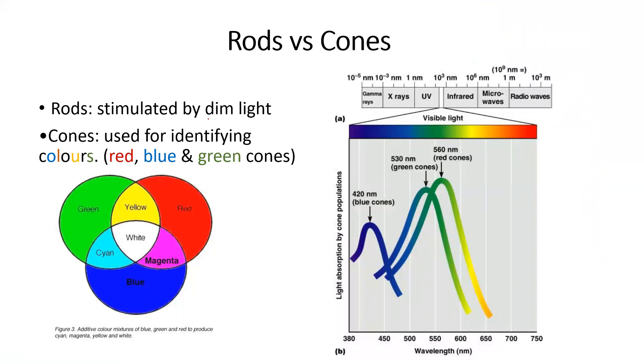Rods are stimulated by dim light. Cones are used for identifying colors, red, blues, and greens. You've got three different types of cones. Three cones. And those cones will, when they're stimulated, will give you the different colors plus the combination. When all three are stimulated, you would get white.